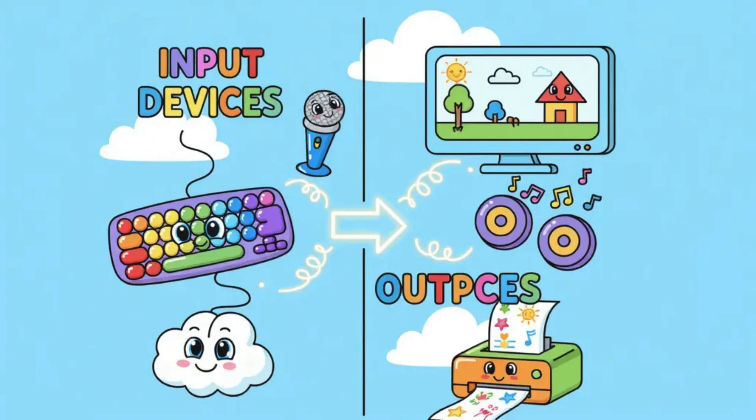That is all for today's lesson. Now you know that input devices allow us to give instructions to the computer, and output devices allow the computer to give information back to us.